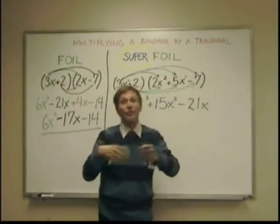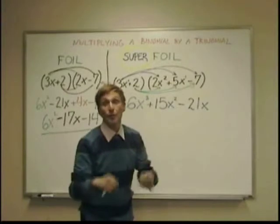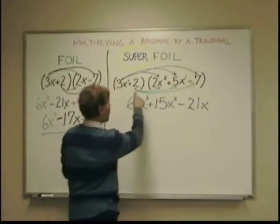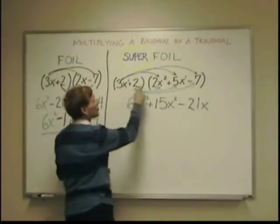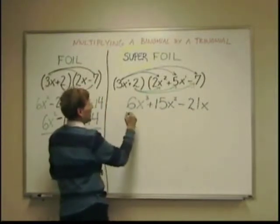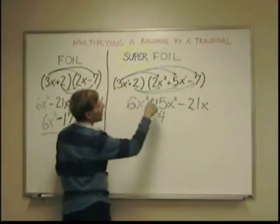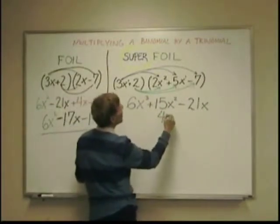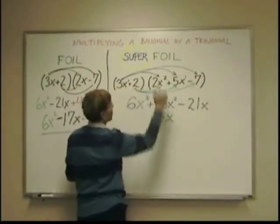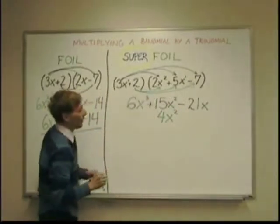But the base numbers you multiply as you always multiply numbers. Regular multiplication for the base numbers. So 2 times 2 is 4. I'll try to line it up where I can. I have 4x squared, because it's just a 2 here and a 2x squared.